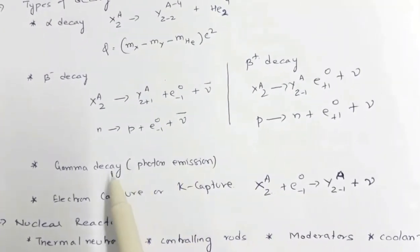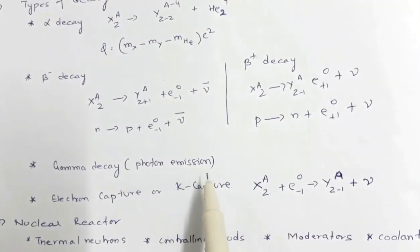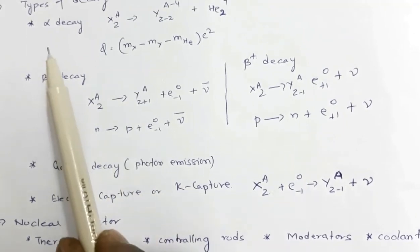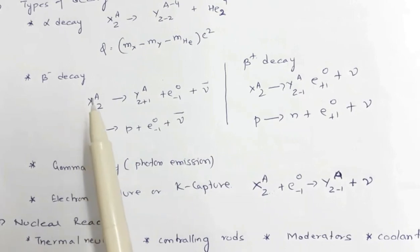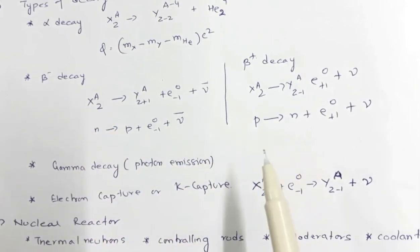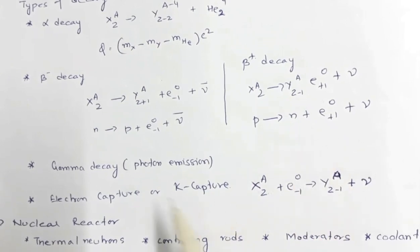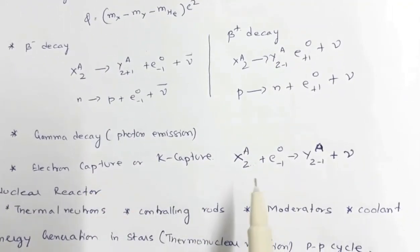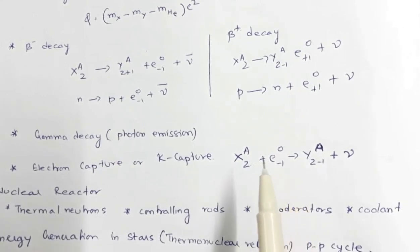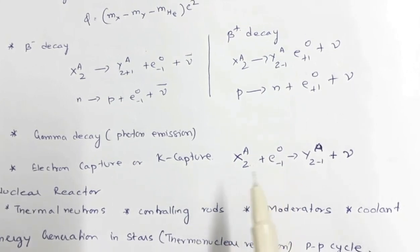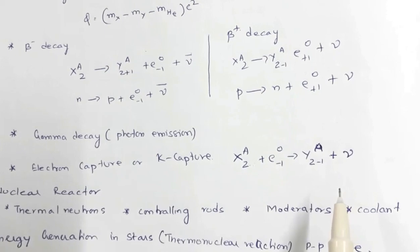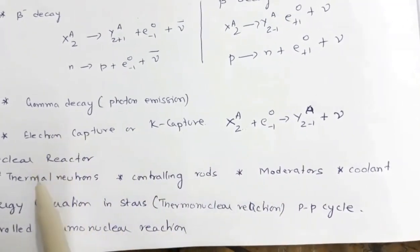Gamma decay involves the emission of a photon. It follows alpha or beta decay — the product nucleus is in an excited state and comes down to the ground state by emitting photons. Then there is electron capture or K-capture, where a nucleus captures an electron from the K shell; the electron combines with a proton to form a neutron, decreasing the atomic number by 1 (Z−1, A), with the release of a neutrino.